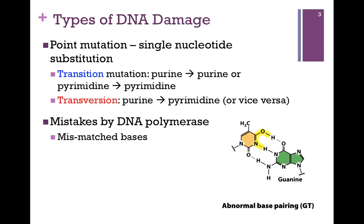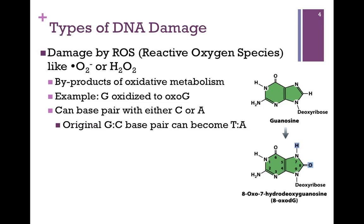How do these replacements occur? The first most common cause would be mistakes made by DNA polymerase. It has proofreading ability, and that limits the error rate to one in a million. But we have four billion base pairs, so it will certainly at some point incorporate the wrong nucleotide. Those are mismatched bases. Here we have an example of an abnormal base pairing between G and T — G would normally pair with C.